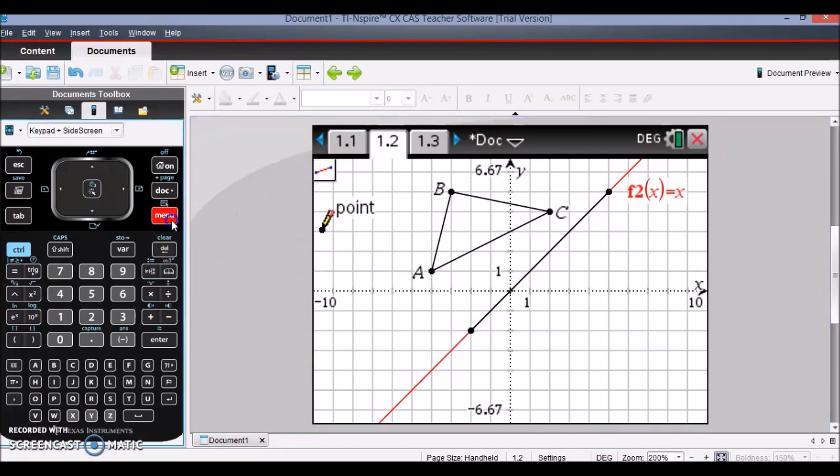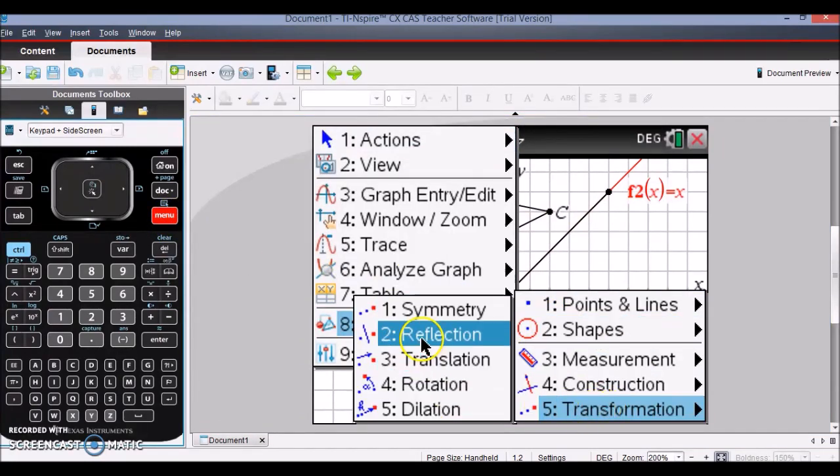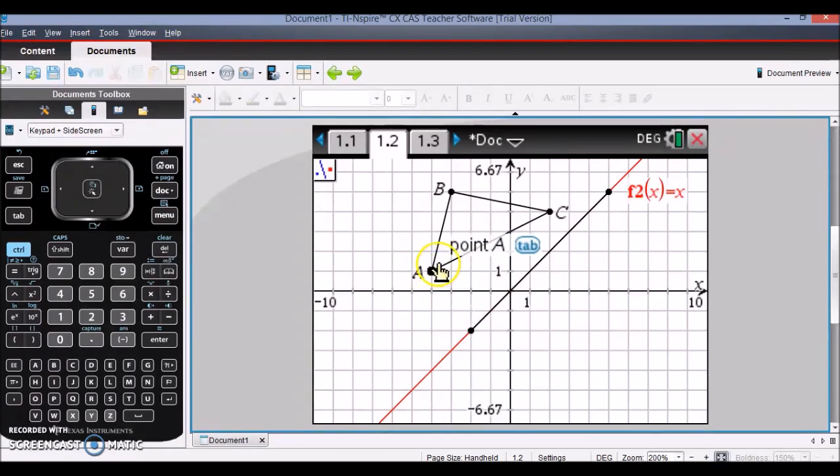And now that I have my line segment constructed, I can go back to my menu under Geometry and Transformation and select Reflection. And so I select my object and the line segment that I want to reflect over, and I can see where my image is going to land up before I finally click on the line segment.